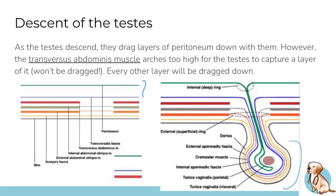One important thing to note is the transversus abdominis muscle, shown in red in the image. You can see there's a little gap — it doesn't actually go through. This is because it doesn't extend far enough or high enough to be pulled down with the testes. So while all the other layers get pulled down with the testes, the transversus abdominis stays in place and doesn't have any corresponding layer in the scrotum.